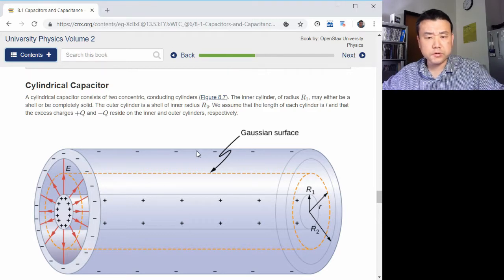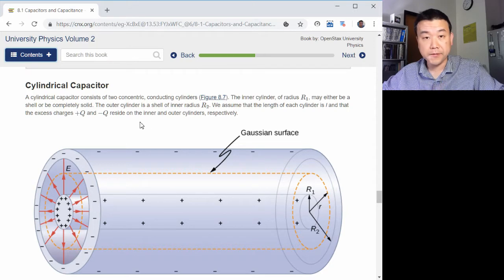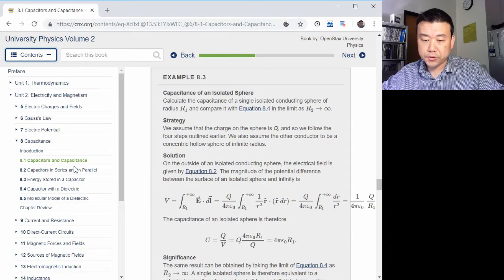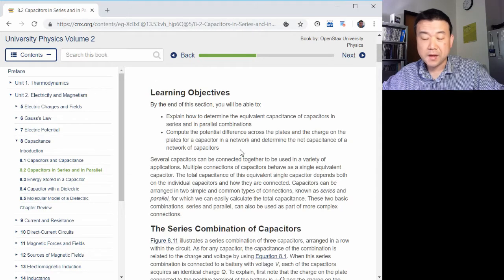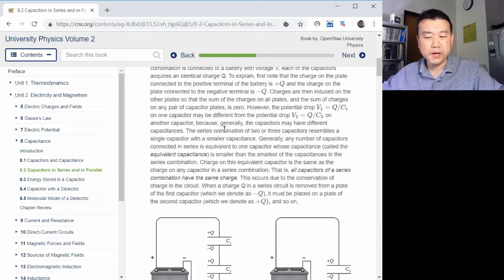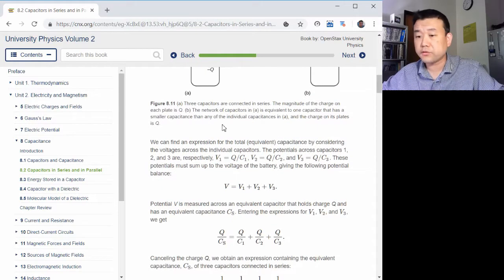Alright. So until we get to circuits, which is where capacitors become more important, there are a couple things that we can cover having introduced the capacitor. So section 8.2 deals with the capacitors, how to combine them, look over it, but we won't really touch on this material until we get to circuits.